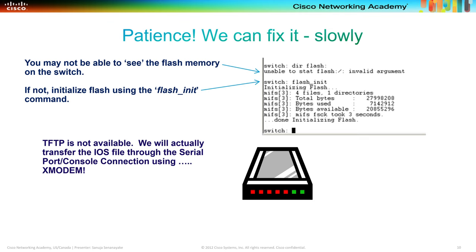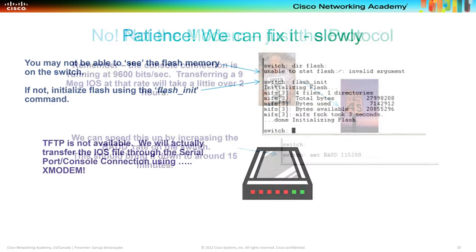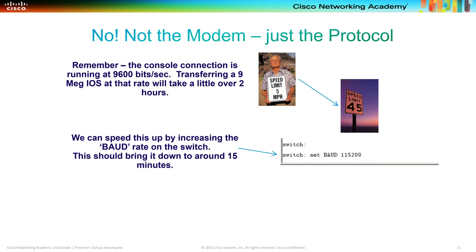To transfer the IOS file via serial using XMODEM, keep in mind the console connection runs at 9600 bits per second. Transferring a nine megabyte IOS image at that rate will take over two hours. However, you can speed it up by increasing the baud rate on the switch. On the Cisco switch, issue 'set baud 115200'. That will bring the two-hour transfer time down to around 15 minutes.